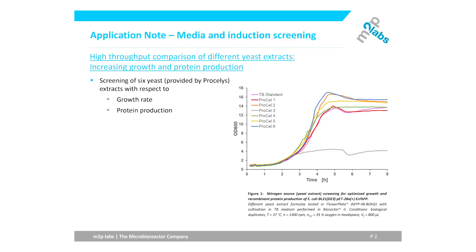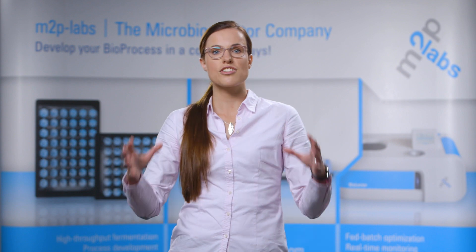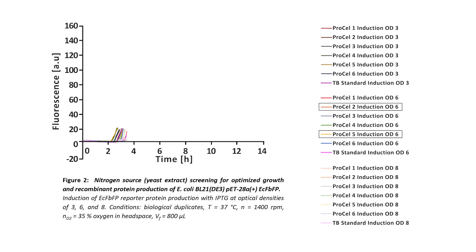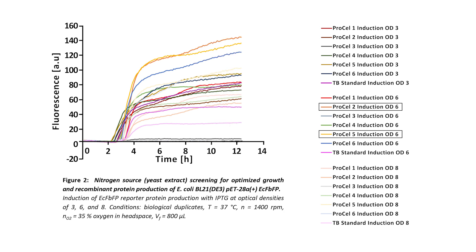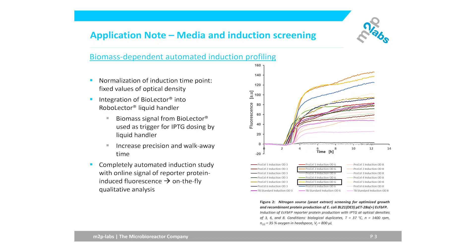What's even more interesting is the protein production in these different media. We used E. coli flavin-based fluorescent protein as a reporter protein for protein production, which is inducible with the inducer IPTG. With the integration of the Bio-Electro into the Robo-Electro, an automated induction dependent on the biomass concentration is feasible. The biomass signal from the Bio-Electro is used as a trigger for IPTG dosing by the liquid handler, so all cultures are induced at the same biomass concentration. This increases precision and reduces hands-on time. With this system combination, a completely automated induction study with an online measured signal of reporter protein fluorescence is feasible in just one experiment in one microtiter plate.